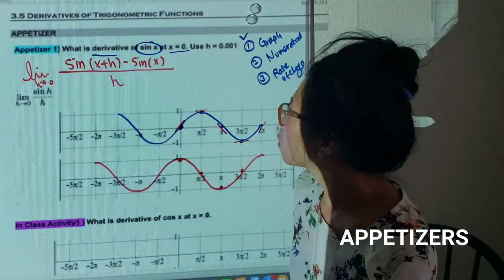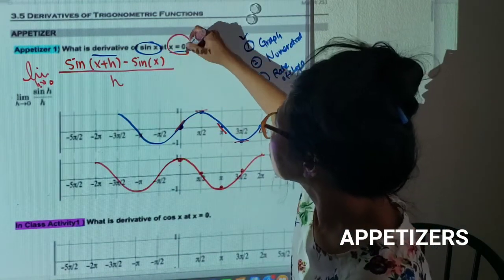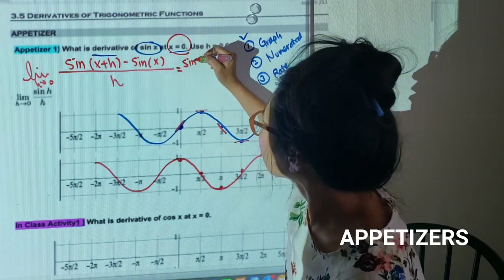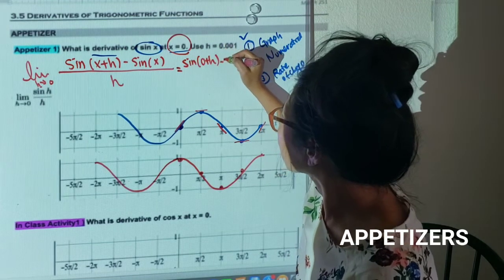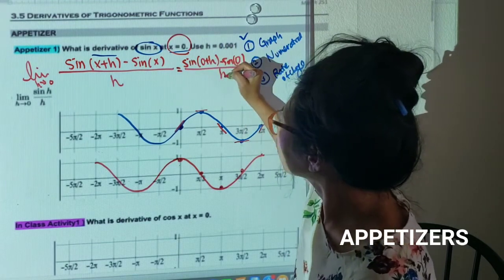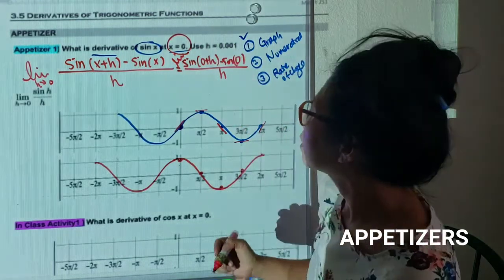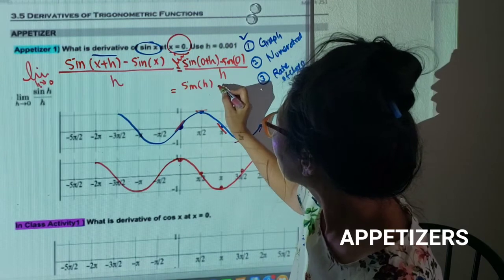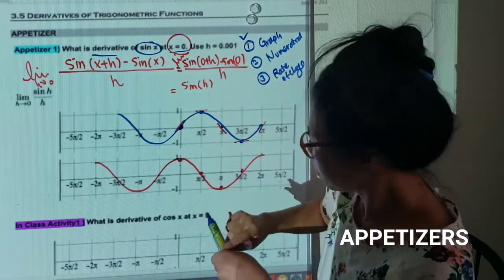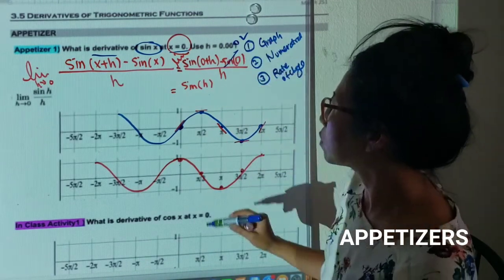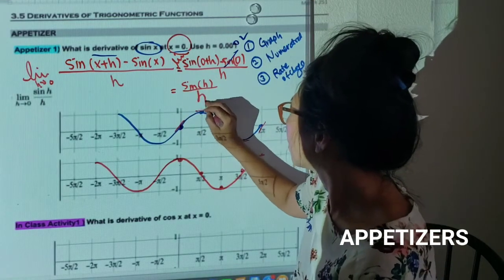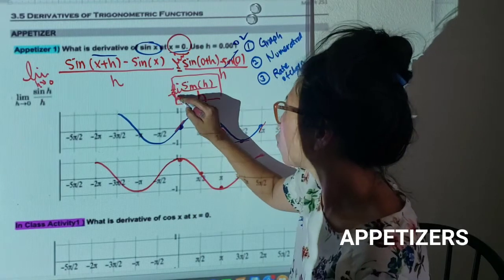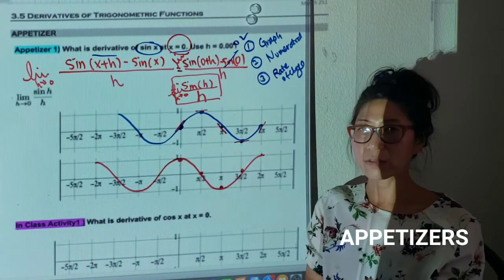When x equals zero, we plug that in: sine(0 + h) minus sine(0) over h. There should be a limit. If I simplify, sine(0) is zero, so this simplifies nicely. Do you see that? That's what we get.